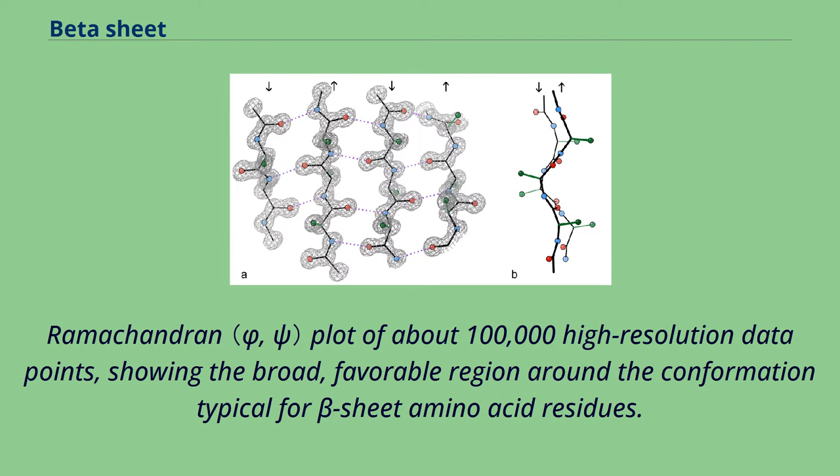Ramachandran plot of about 100,000 high-resolution data points, showing the broad, favorable region around the conformation typical for beta sheet amino acid residues.